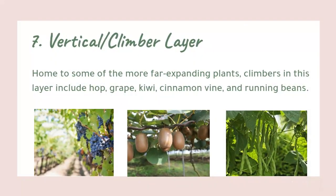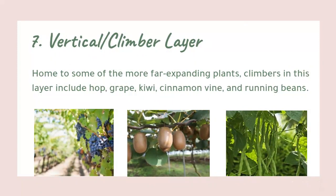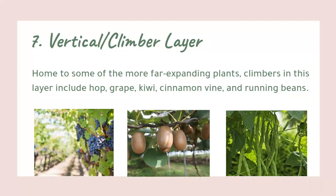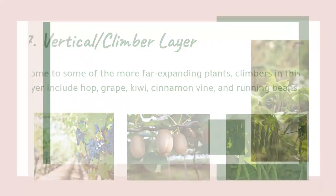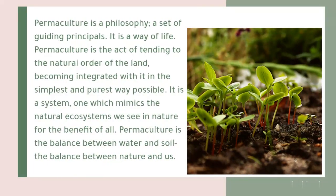Layer 7: Vertical or climber layer. Home to some of the more far-expanding plants, climbers in this layer include hop, grape, kiwi, cinnamon vine, and running beans.